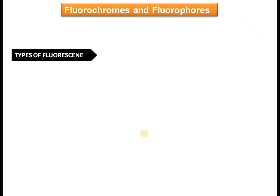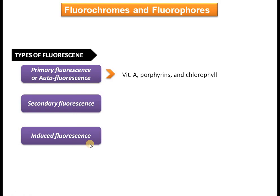There are several types of fluorescence. Number one is primary fluorescence or auto-fluorescence, which is shown by fluorophore substances. Number two is secondary fluorescence, where fluorescent substances are used to stain cellular components. Number three is induced fluorescence, which requires a chemical substance that activates the fluorescence property — the substance remains inactive until stimulated.